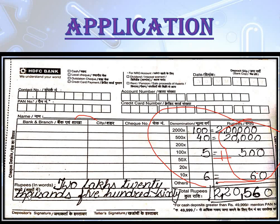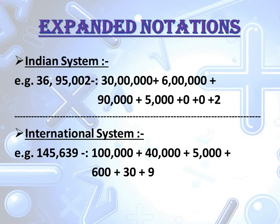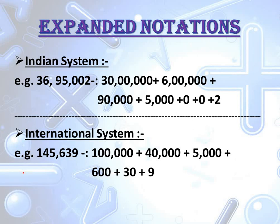So what have you learned? How to write in words and how to write the expanded form — separating the number into digits. For better understanding the expanded form, first we have to learn the basics according to place value. Expanded form means to separate the digits in a number according to their place value.